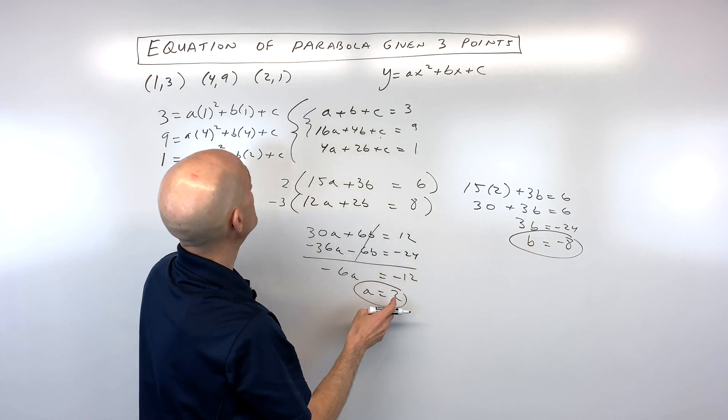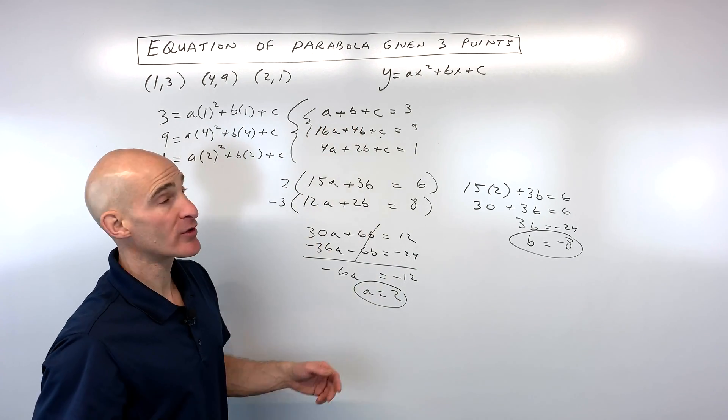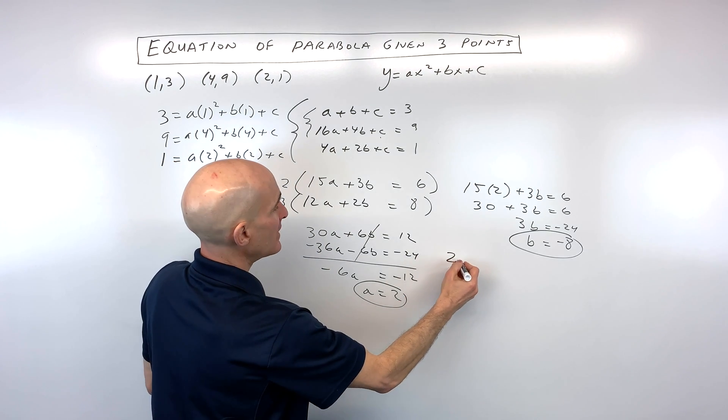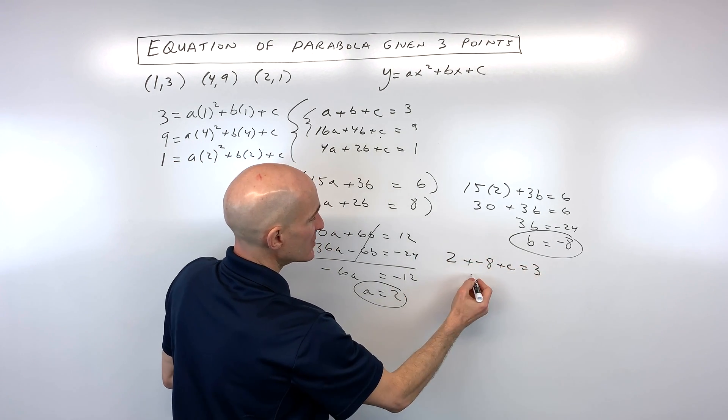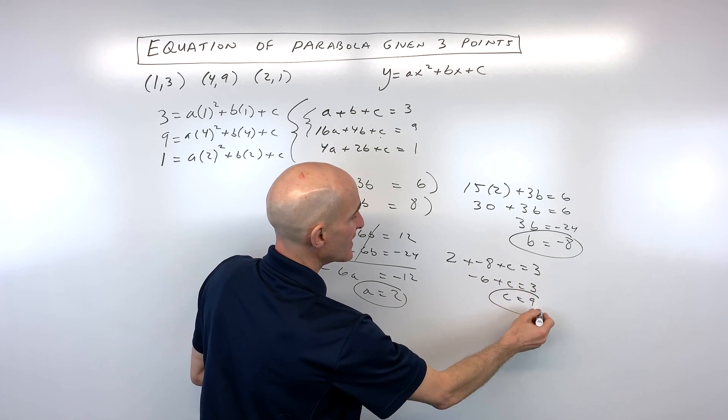Now we know what a and b are. We just need to solve for c. I'm going to go ahead and put those into one of the equations that we started with originally with three variables. I'm going to put it into this top equation. a is 2, b is negative 8, c we don't know. And you can see this is negative 6 plus c equals 3. Add 6 to both sides, we get c equals 9.